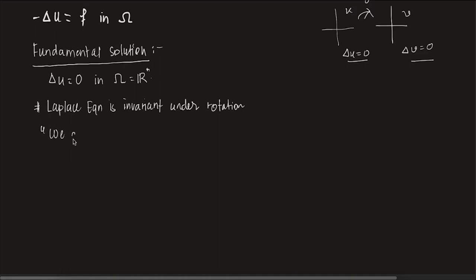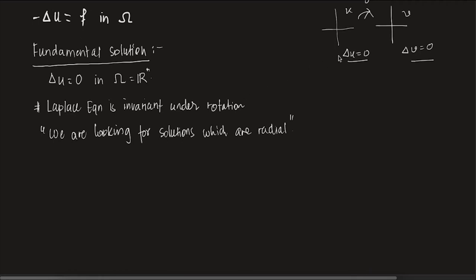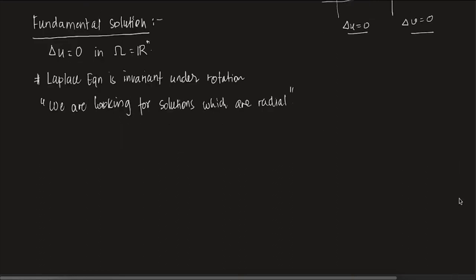We are looking for radial solutions. Why are we looking for radial solutions? Because we know the Laplace equation is invariant under rotation. So if you rotate U, the resulting function in the new coordinate also solves the Laplace equation, and hence the problem should admit radial solutions.